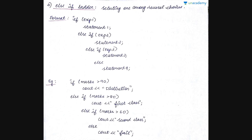Next is the else-if ladder — selecting one among several choices. The syntax is: if expression one is true, statement one executes; else if expression two is true, statement two executes; else if expression three is true, statement three executes; and finally else statement four executes if none of the above conditions are true.